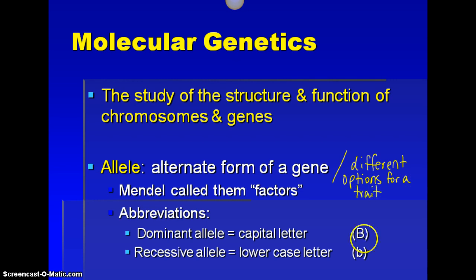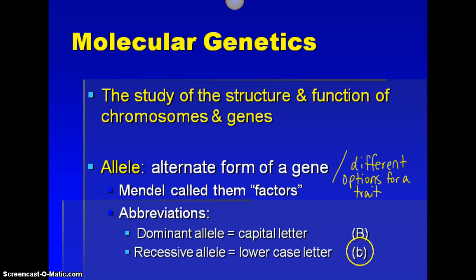The dominant allele will be a capital letter, and the recessive allele will be a lowercase letter. Notice that our letters are still big B and little b — they're the same letter, just the capital or lowercase version. You can't pick a random letter for the recessive allele; it has to be the lowercase version of that dominant letter. I often put a line over the lowercase letter because some letters, like S, look very similar as capital or lowercase. Putting a line over the lowercase S helps identify it as the recessive letter.